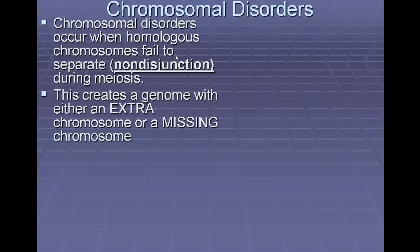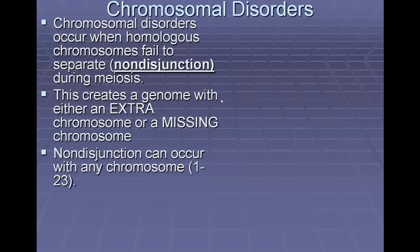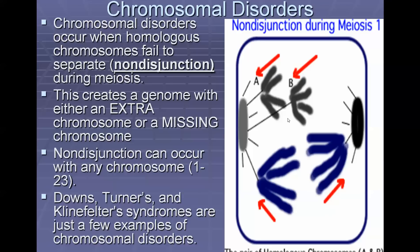Homologous chromosomes don't separate during metaphase one when they should be splitting apart. Non-disjunction can occur with any chromosome, one through 23. Here's a visual of non-disjunction — the A and B chromosomes are getting pulled to one side instead of being split apart, leaving all of those cells with an incorrect chromosome number. Some examples of this are Down syndrome, Turner syndrome, and Klinefelter's, among others.